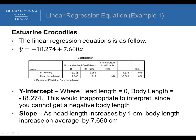In the crocodile data, we're predicting body length based off of head length. When we calculate it, we get a predicted y equal to negative 18.274 plus 7.660 times x. You can calculate this using Excel or SPSS — here's an example of that output, showing where you get your y-intercept and your slope. So in this equation, b-naught is negative 18.274 and b1, our slope, is 7.660.